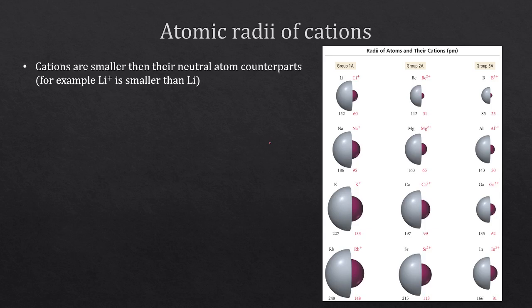Electrons are what determine the size of our atom. The outside part of the atom is made up of electrons while the protons and neutrons are in the middle. So as we get rid of electrons, our atom tends to get smaller. Cations are smaller than their neutral atom counterparts. Comparing lithium to lithium plus, lithium plus is significantly smaller.